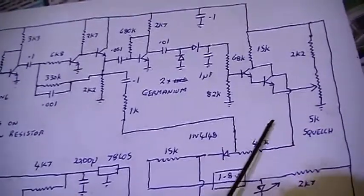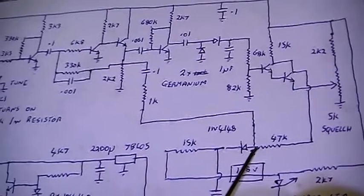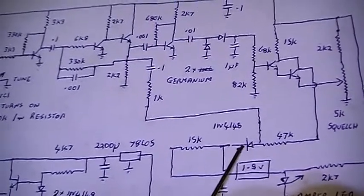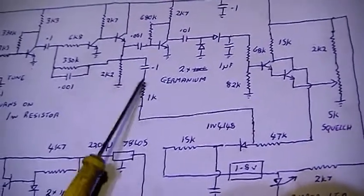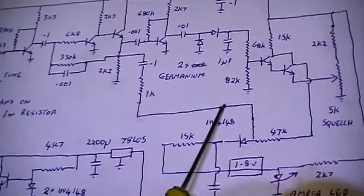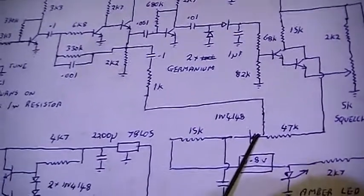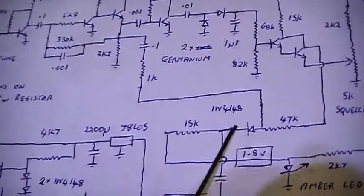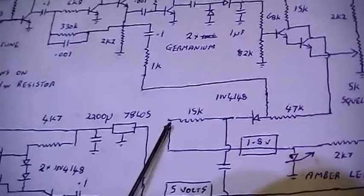That collector voltage is sent down, which either forward or reverse biases a diode. This is the squelch gate. The audio is taken from the emitter follower stage, goes into the diode, and depending whether the diode's forward or reverse biased means that the audio will or will not appear at the anode.